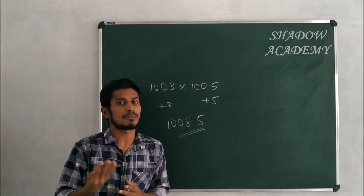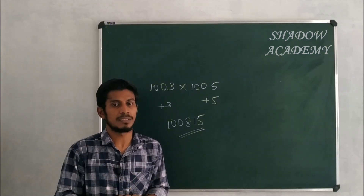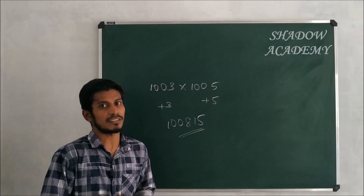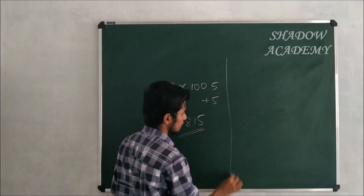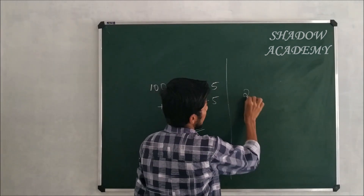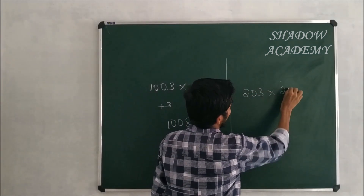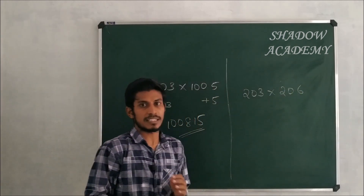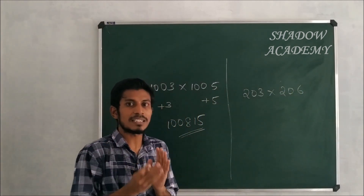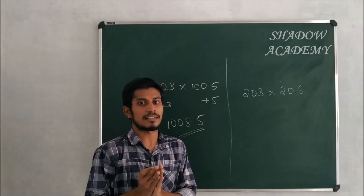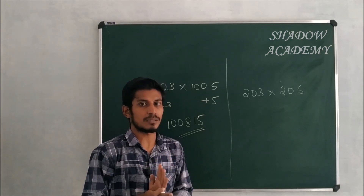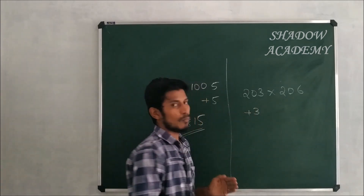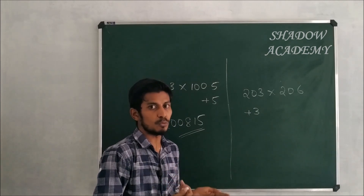For example, 203 × 206. If we want to do this, let's compare to base 200. 203 is 3 times more than 200, and 206 is 6 times more than 200.